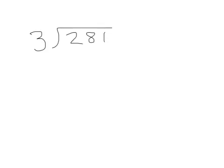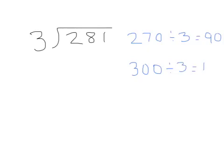This example is a little different because it actually has two possibilities. We can round up or down when looking for compatible numbers. 3 is not compatible with 281, but it is compatible with 270. So if I think 270 divided by 3, my answer would be 90. I could also round 281 up to 300 and divide 300 by 3, which would equal 100.